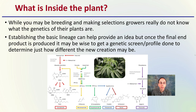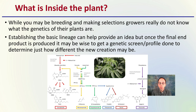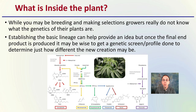You also need to consider what is happening inside the plant. While you may be breeding and making selections, growers really do not know what the genetics of their plants are. Establishing the basic lineage can help provide an idea. But once the final end product is produced, it may be wise to get a genetic screen or profile done to determine just how different the new creation may be. If you think you're breeding something really different and unique — at least phenotypically — getting it genetically screened or profiled might be advantageous, just to see how unique that plant actually is. Is it really different, or is it an influence of the environment? It's good to know that before you start mass producing it — and whether it's related to your environmental growing conditions or if you really have some very unique genetics.